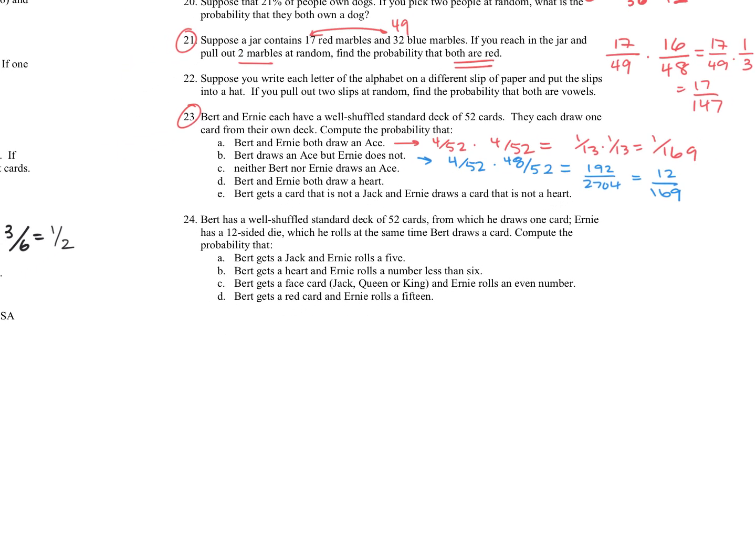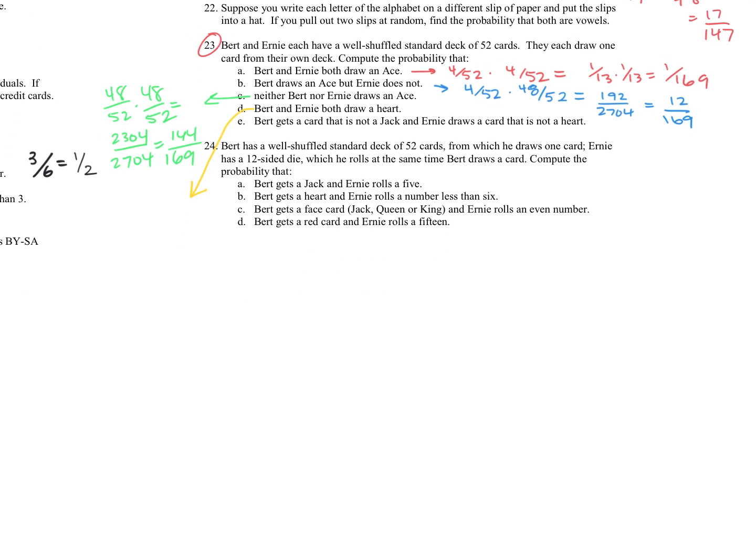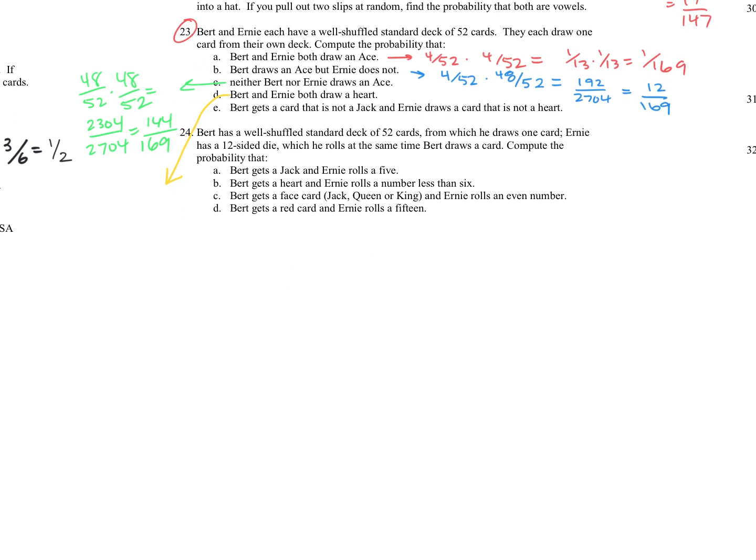Now, we're looking at neither Bert nor Ernie drawing an ace, so that's going to be 48 out of 52 times 48 out of 52, which will equal 2304 out of 2704, which would reduce to 144 over 169. Now, kind of tight on space. It'd be really nice if you use some scratch paper for this. I'm trying to squeeze it all in so I could see the problems.